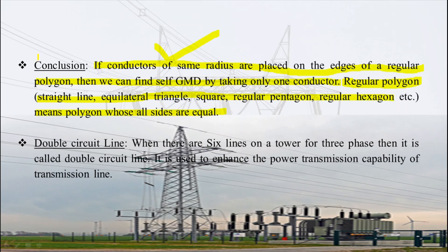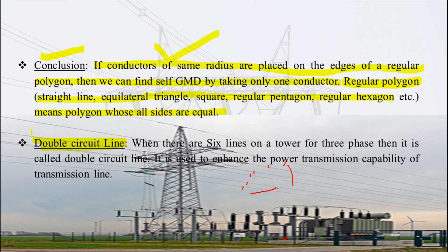Another important concept is the double circuit line, which is very commonly used in power transmission. When there are six lines on a single tower — meaning two lines for each of the three phases — it is called a double circuit line. It is used to enhance the power transmission capability of the transmission line.